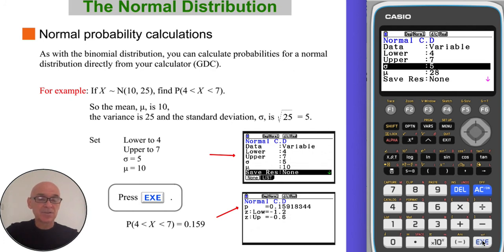Press enter. We can enter the standard deviation. Notice we have to enter the standard deviation, not the variance. The standard deviation is 5. And enter the mean, which was 10.